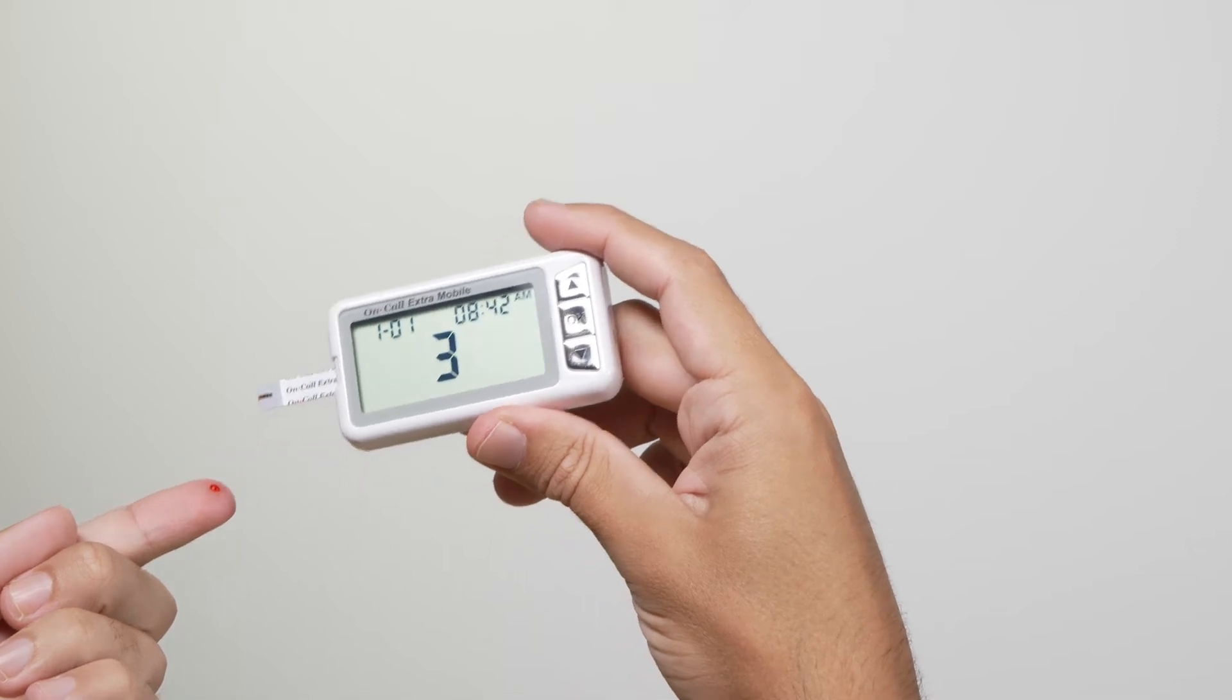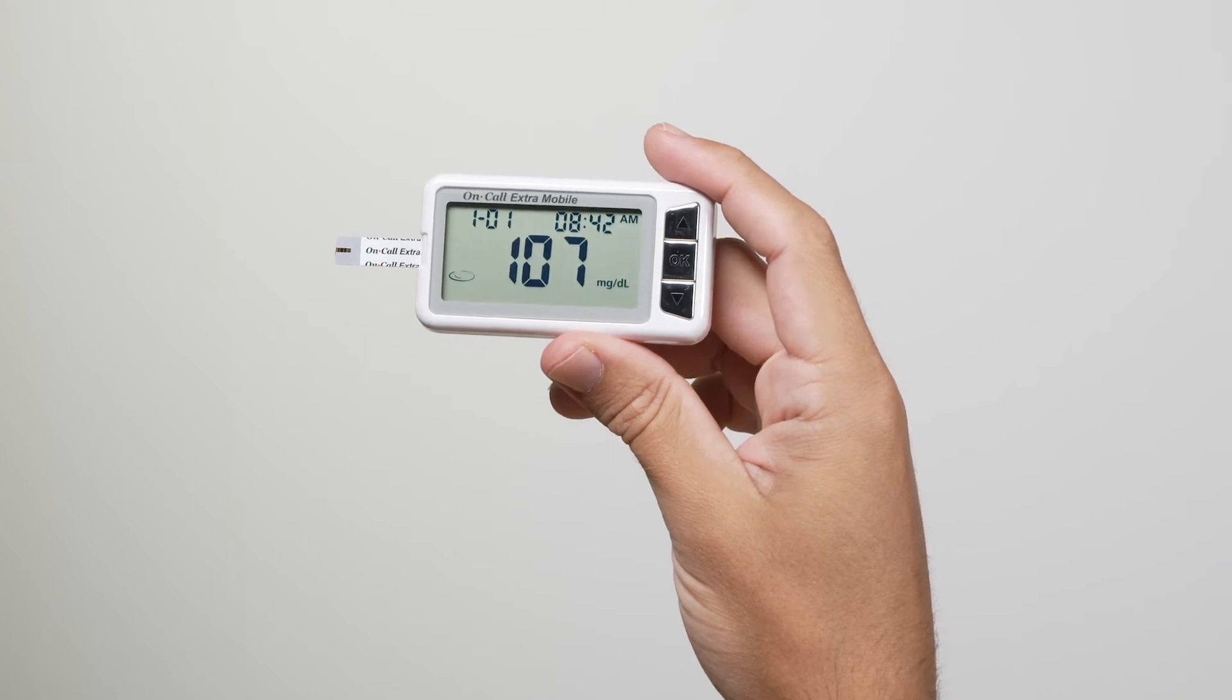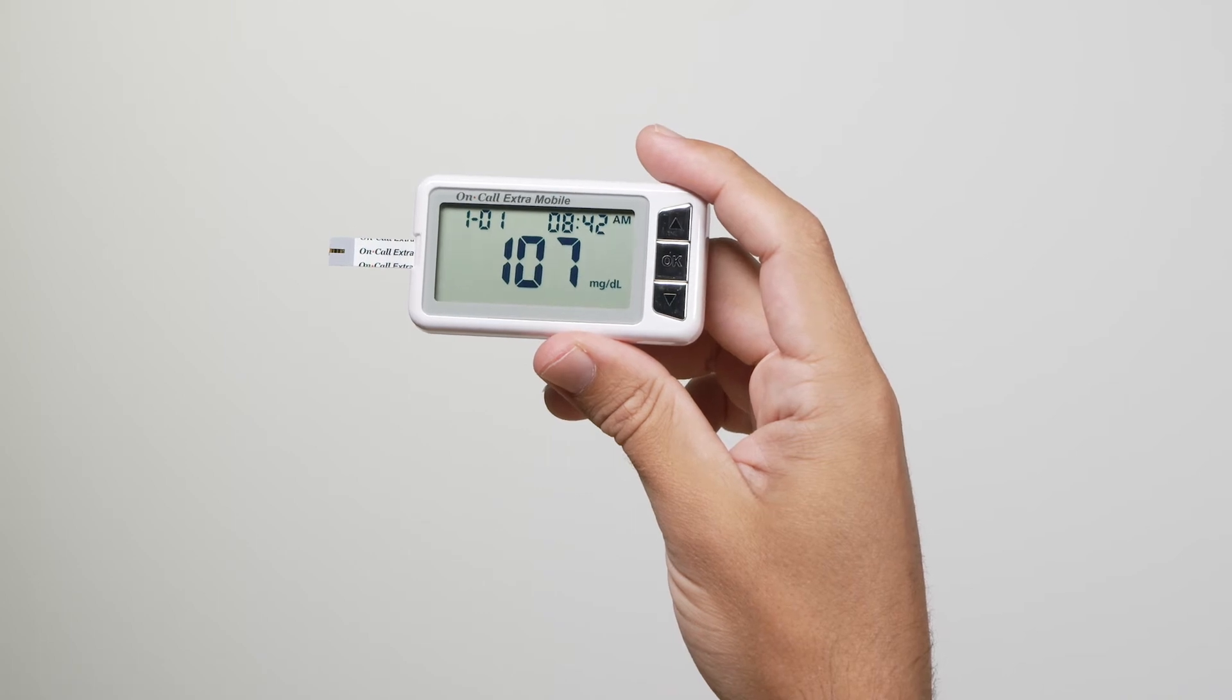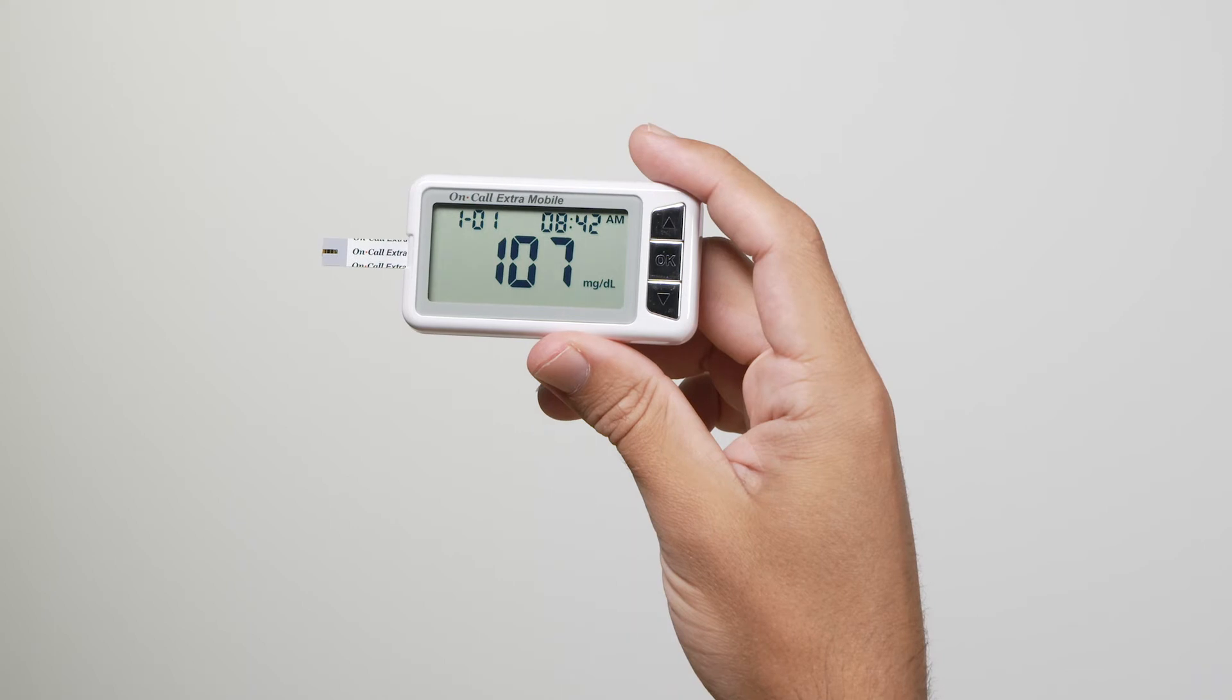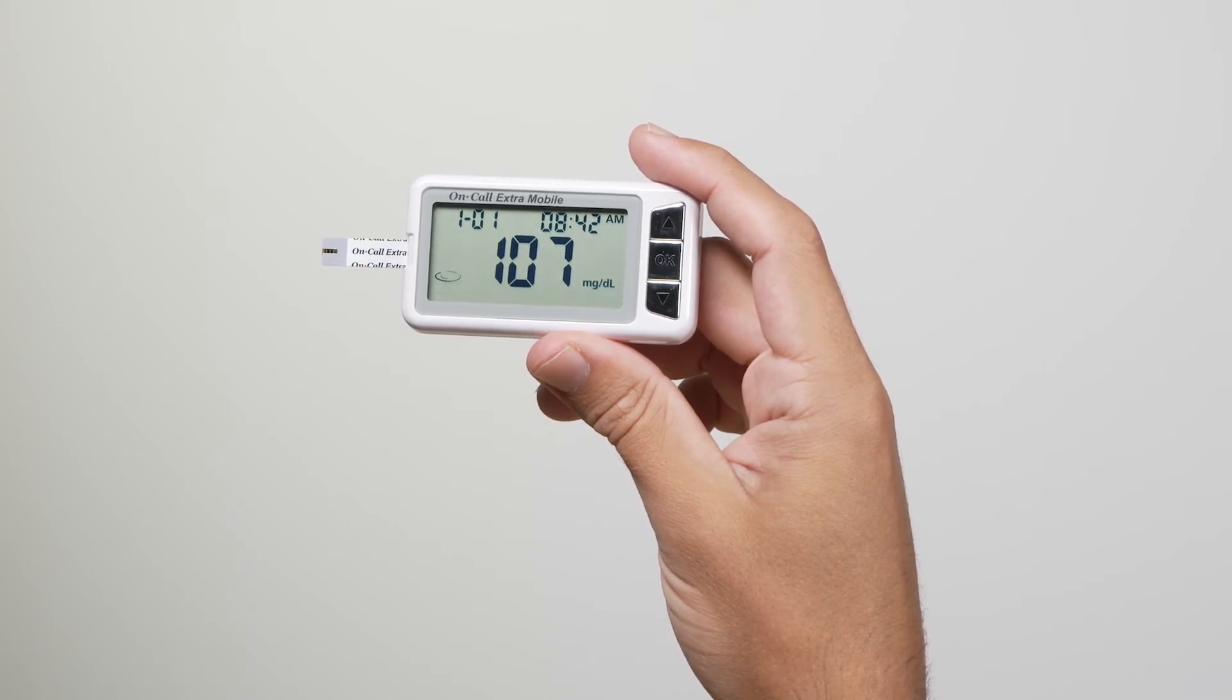The meter will count down from 3 to 1 and then display the measurement's result. The meter will also beep to indicate that the measurement is complete. Then your blood glucose level will display on the screen. The measurement's unit, date, and time of the test will also be displayed. Blood glucose results are automatically stored in the memory.